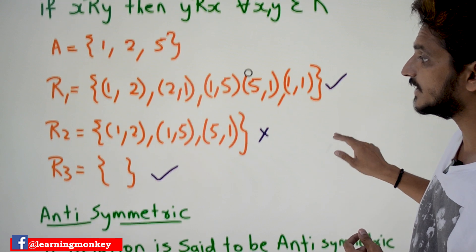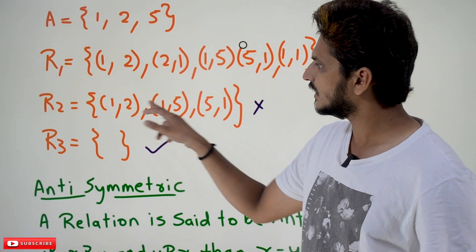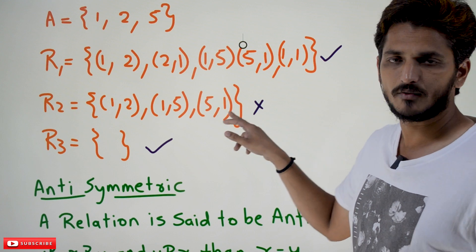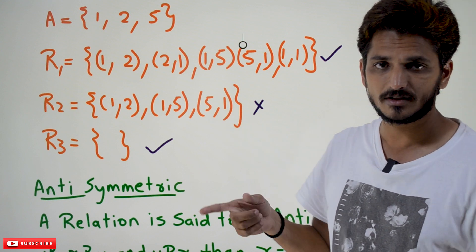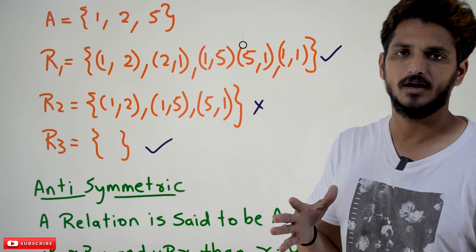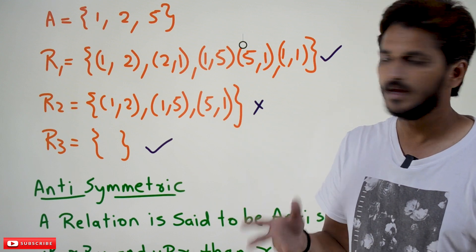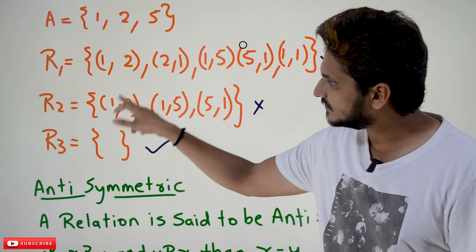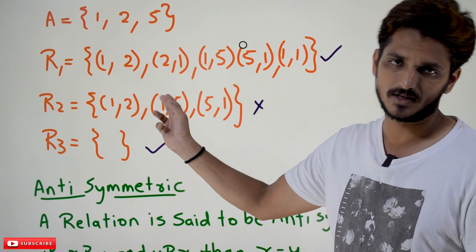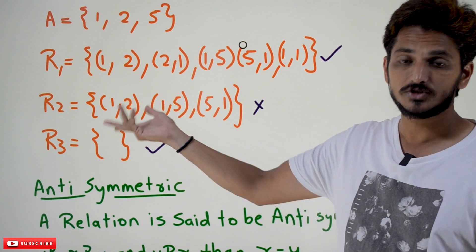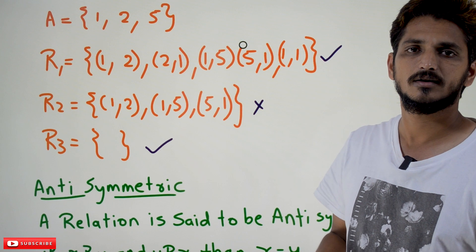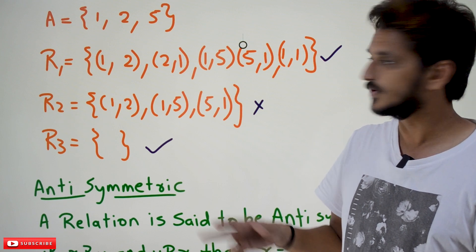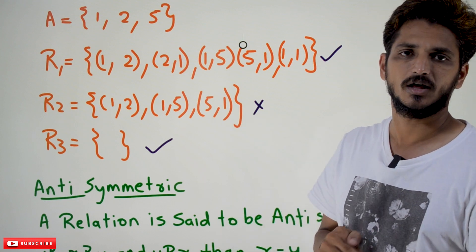Let's take the next example. R2 = {(1,2), (1,5), (5,1)}. Is it a symmetric relation? No, it is not. For the pair (1,2), x relates y but y relates x — (2,1) — is not there. So that's why it is not a symmetric relation.